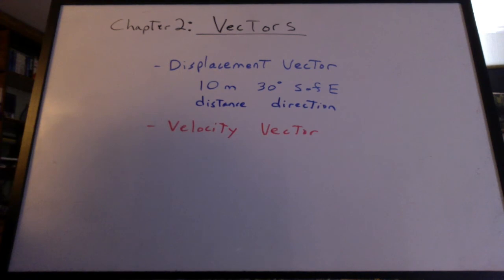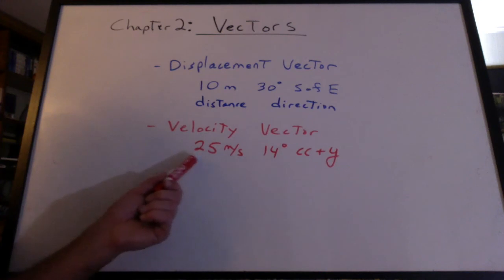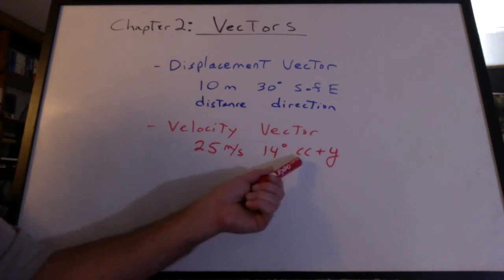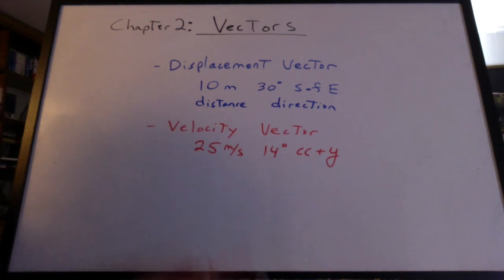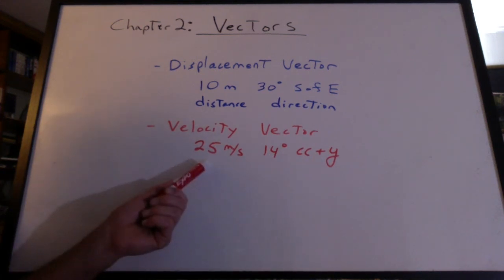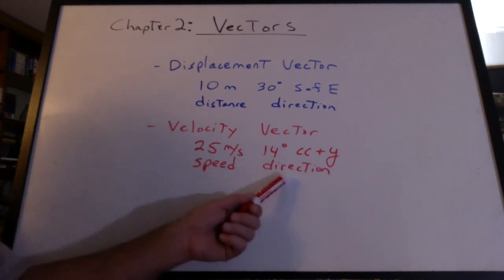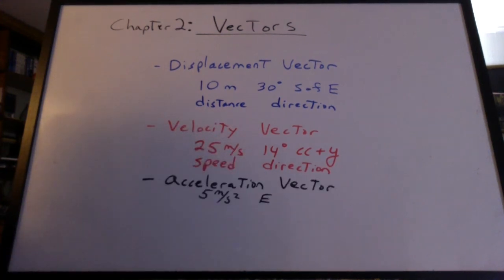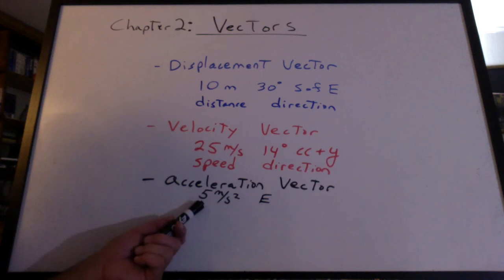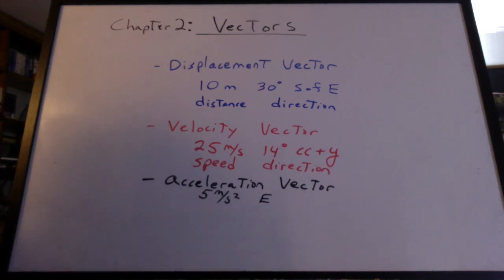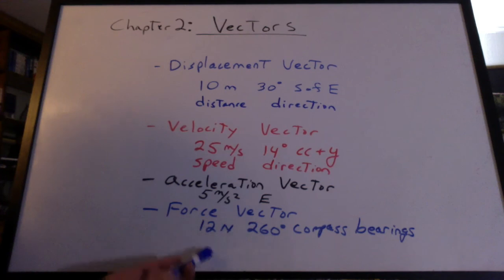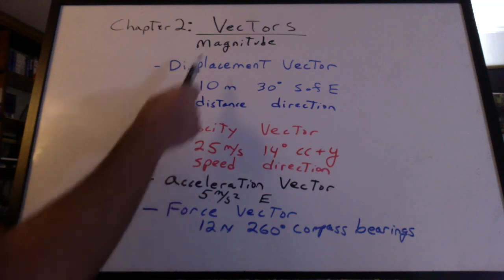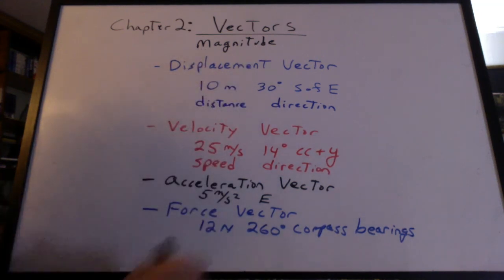There are other kinds of vectors we'll use. For example, a velocity vector — let's say we were traveling 25 meters per second, 14 degrees counterclockwise from the positive y-axis. How fast you're going is called the speed. Take a speed, put a direction to it, and it becomes a velocity — that's a vector. There are also acceleration vectors: an acceleration with a direction. And we can have a force vector: a force with a direction. In general, all vectors have a magnitude and a direction.